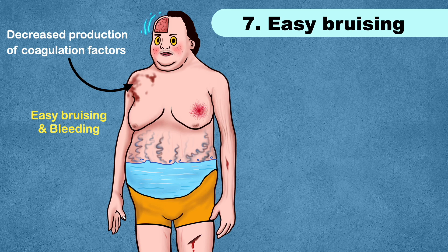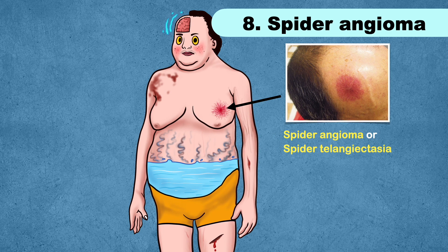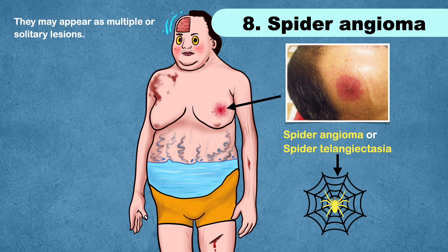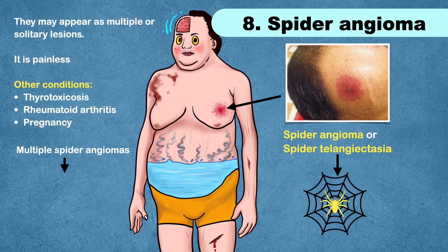You may also see web-like clusters of blood vessels under your skin, called spider angiomas or spider telangiectasia. The lesion contains a central red spot with reddish extensions that radiate outward like a spider's web. They may appear as multiple or solitary lesions, are painless, and can also be seen in conditions like thyrotoxicosis, rheumatoid arthritis, and pregnancy.